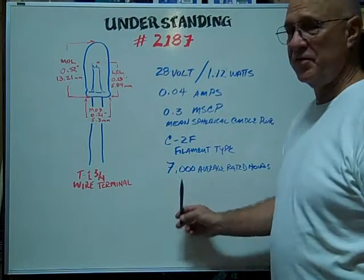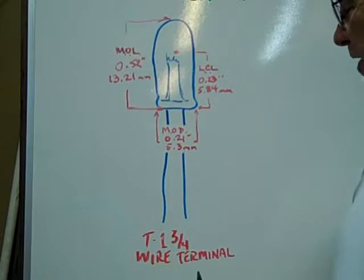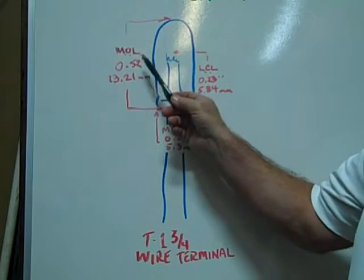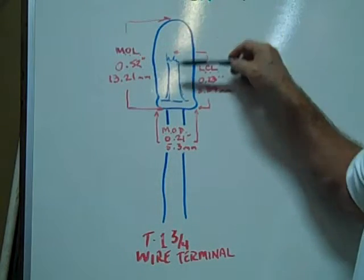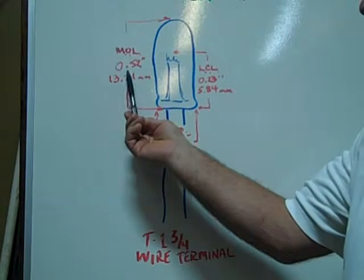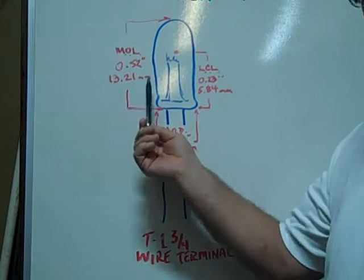The average rated hours are 7,000 hours. The T1-3 quarter wire terminal base bulb has a maximum overall length of just the glass envelope, not including the wire terminals, of 0.52 inches, 13.21 millimeters.